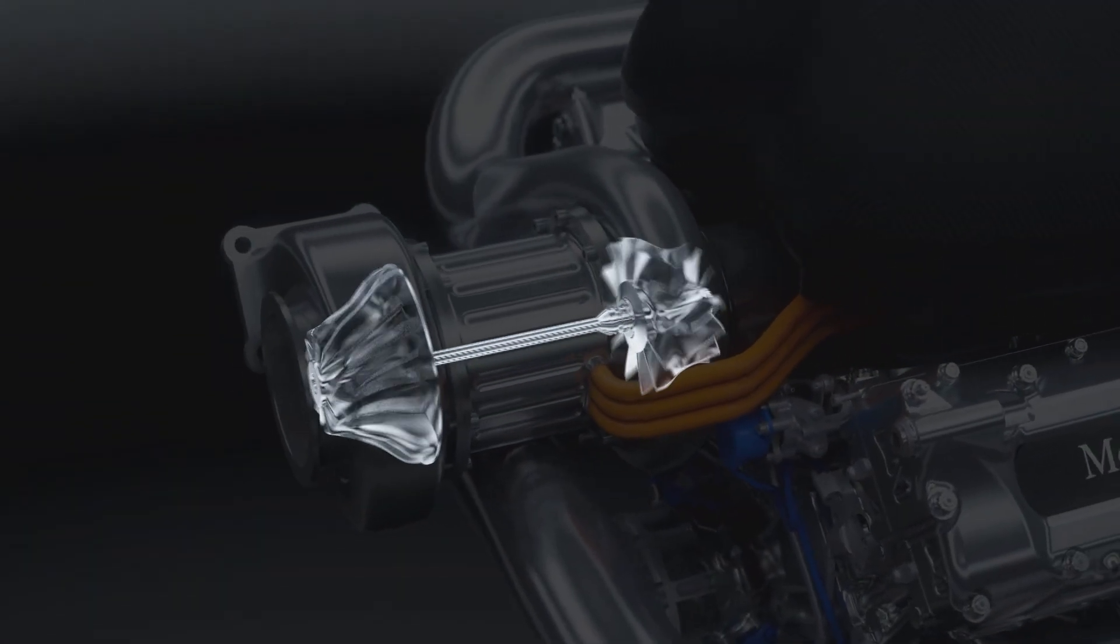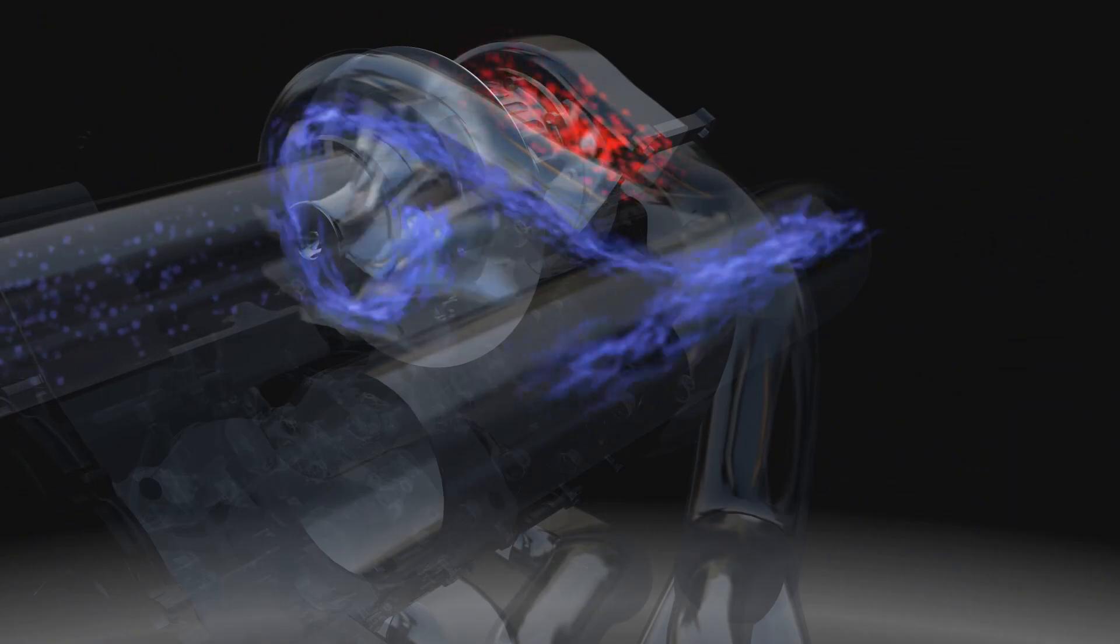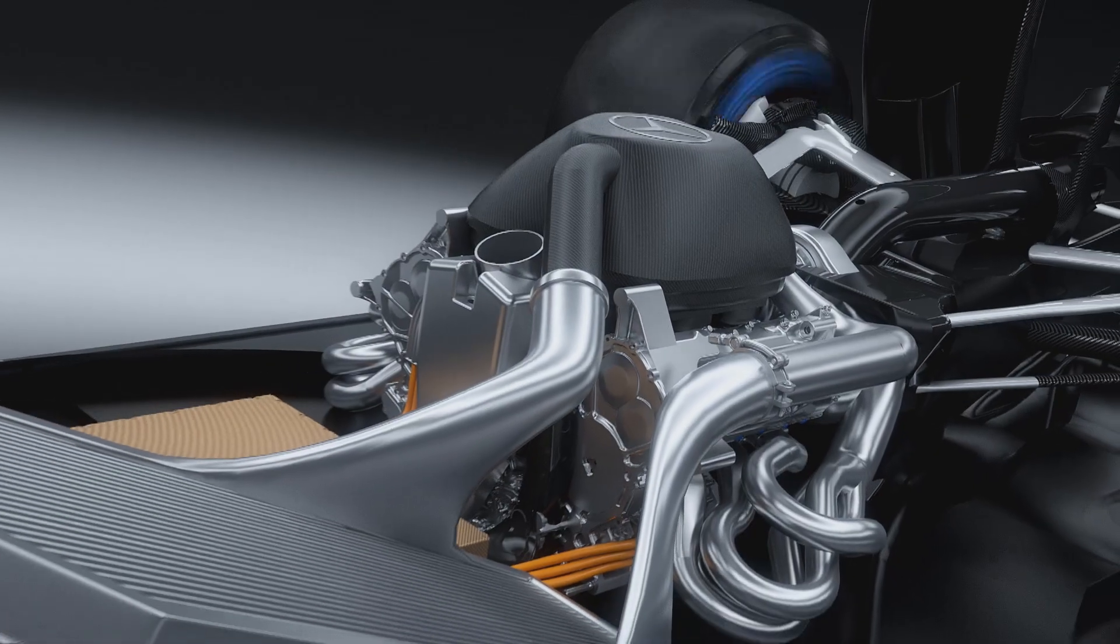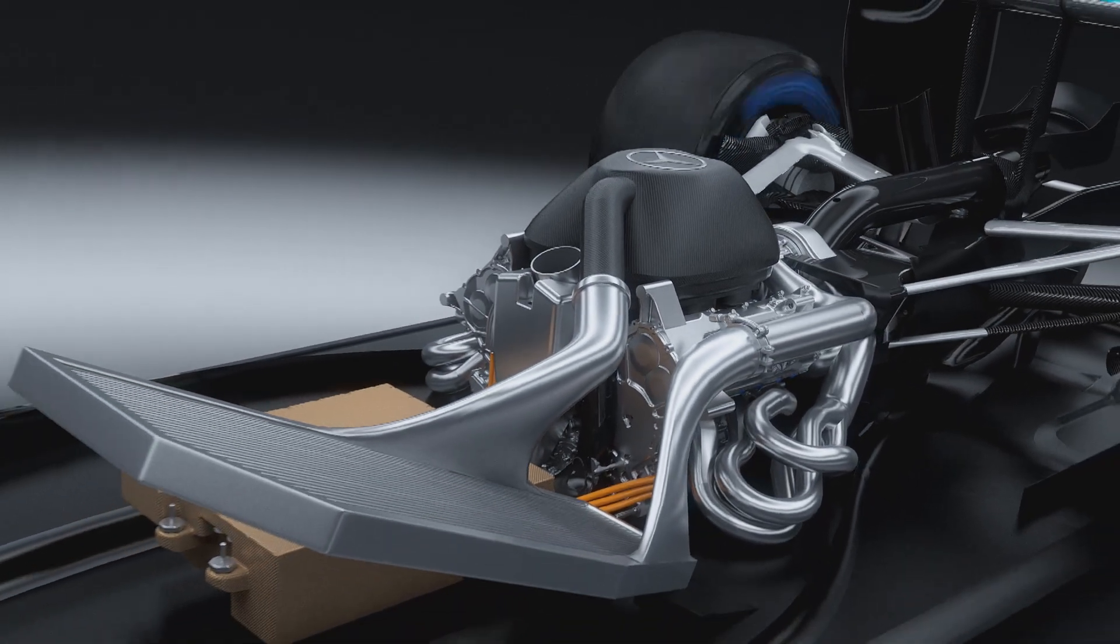This turbocharger uses the otherwise wasted exhaust gas to push more fresh air into the combustion chamber for enhanced fuel efficiency. Before reaching the air intake, the compressed air passes through an intercooler to increase its power density.